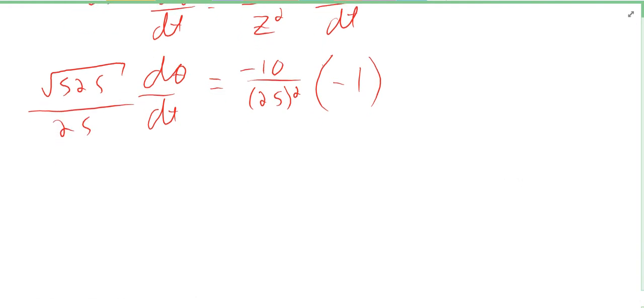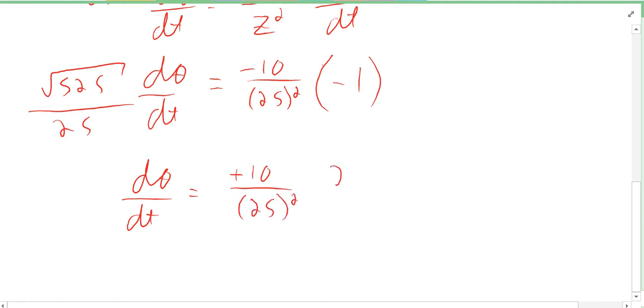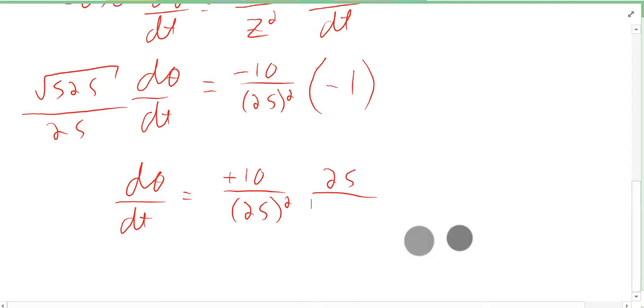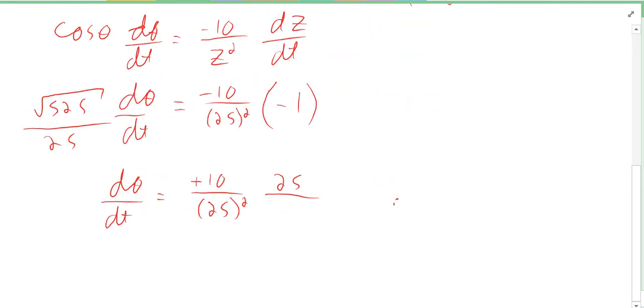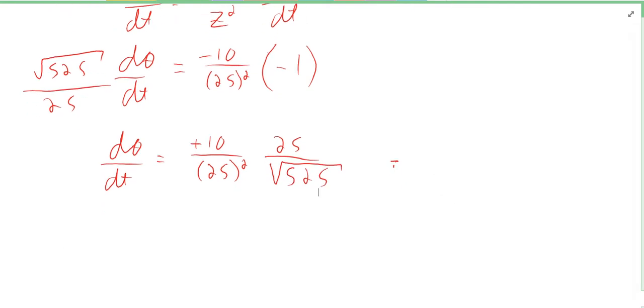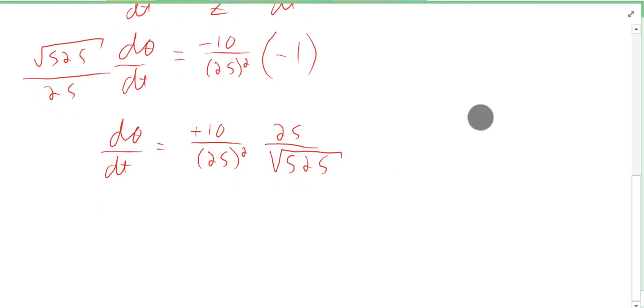All we're going to do is solve for dθ/dt. So dθ/dt happens to be positive 10, because the negatives cancel out, over 25 squared, which is 625. I'm going to multiply that by 25, divided by the square root of 525, and all I gotta do is simplify that out.